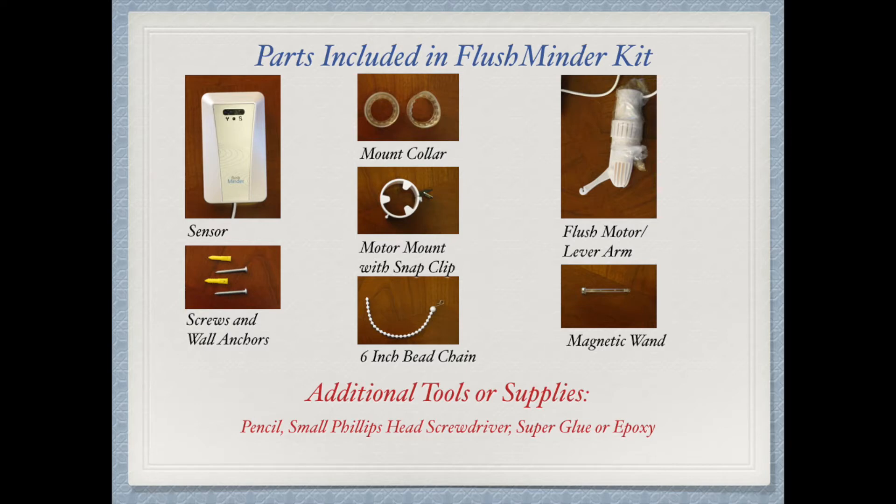Your FlushMinder Kit includes the sensor, screws and wall anchors, two mount collars, the motor mount with snap clip, a 6 inch bead chain, the flush motor with the lever arm, and the magnetic wand.